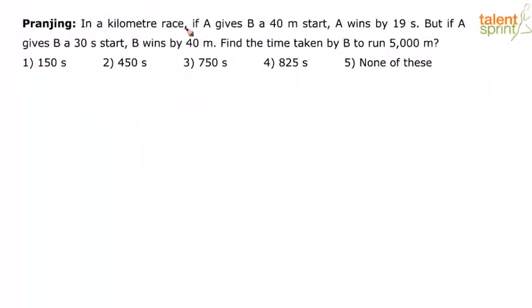In a kilometer race, if A gives B a 40 meter start, A wins by 19 seconds. But if A gives B a 30 second start, B wins by 40 meters. Find the time taken by B to run 5000 meters.